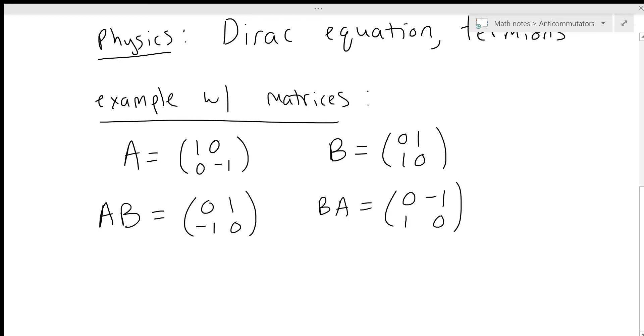Now if we compute the anticommutator, which remember is just the sum A times B plus B times A, we actually find that it's the zero matrix, so it vanishes.